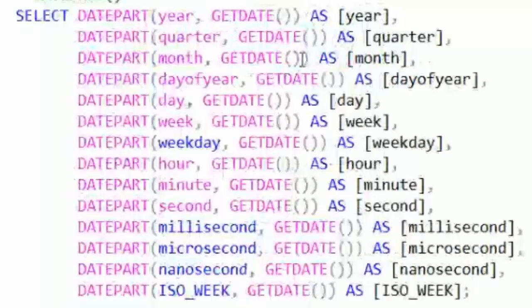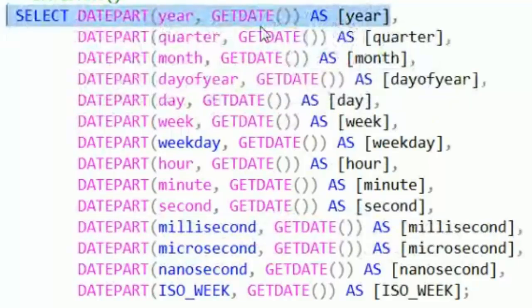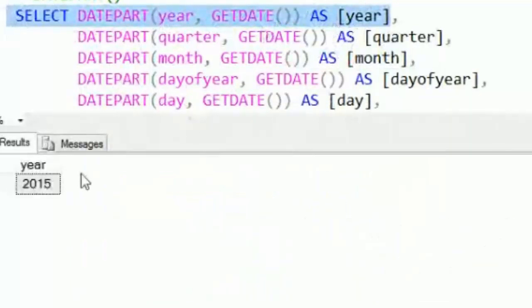Here I've broken it out into a number of functions. I'm just going to highlight the first part here and run DATEPART of year for the current GETDATE, which is right now. When we run that, we can see it takes the date that's given and extracts the year from it, and it gives us 2015.